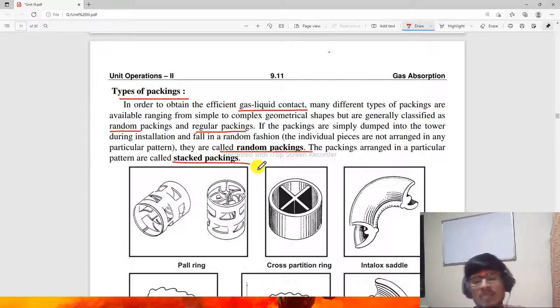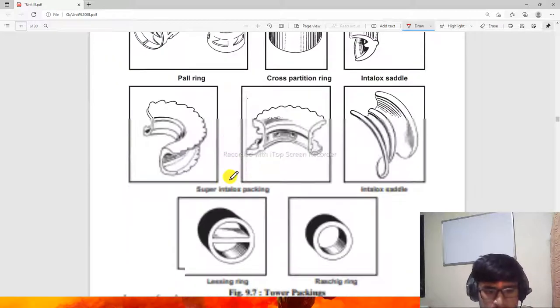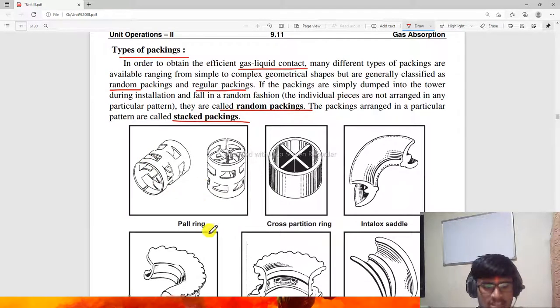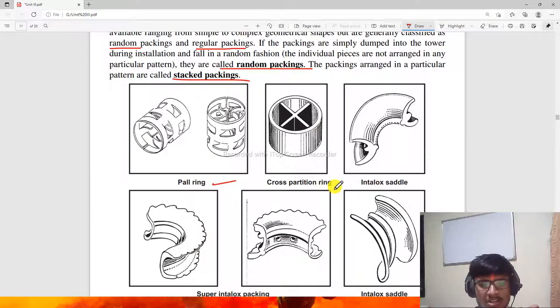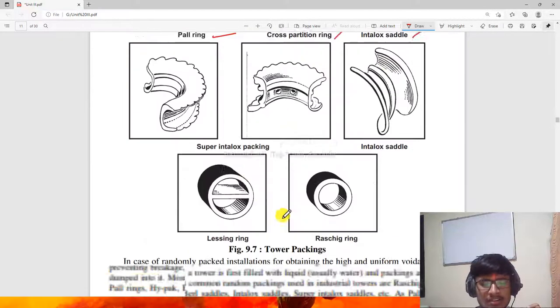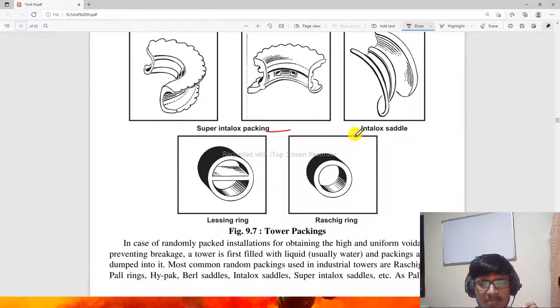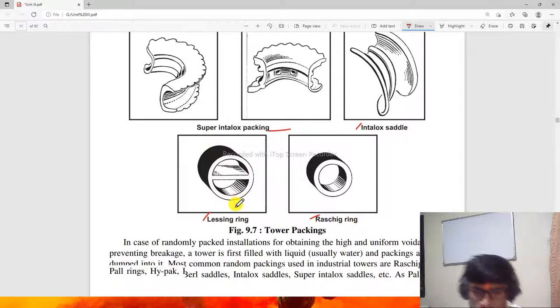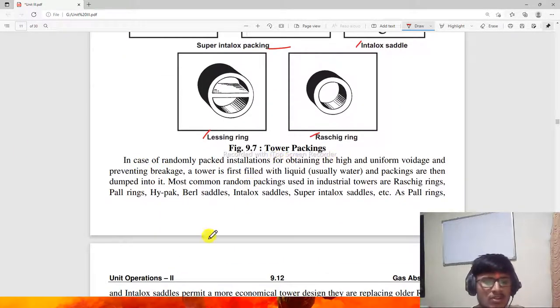These are two types of packings: random packing and regular packing. Types of packings include Pall ring, cross partition ring, Intalox saddle, and Super Intalox saddle, lessing ring, and Raschig ring. These are both types of packings. Common random packings in industrial towers are Raschig ring, Pall ring, Hypac, Berl saddle, and Intalox saddle.